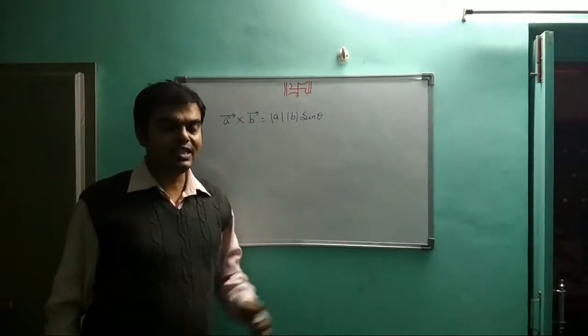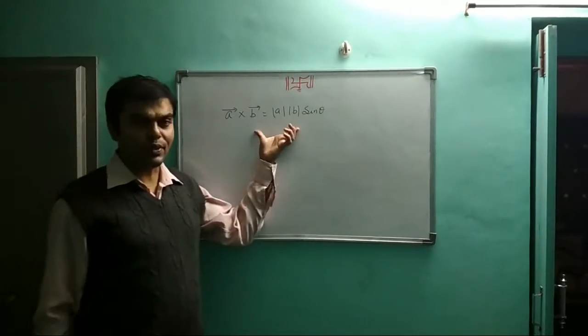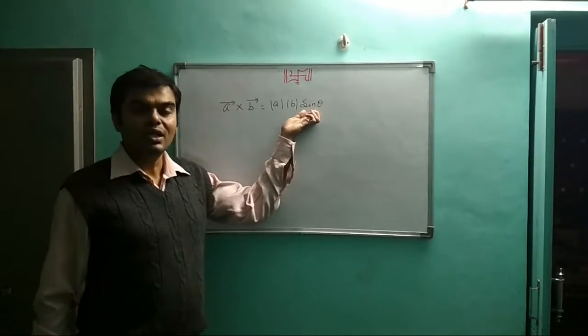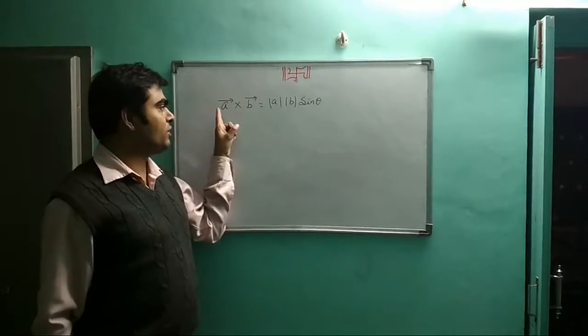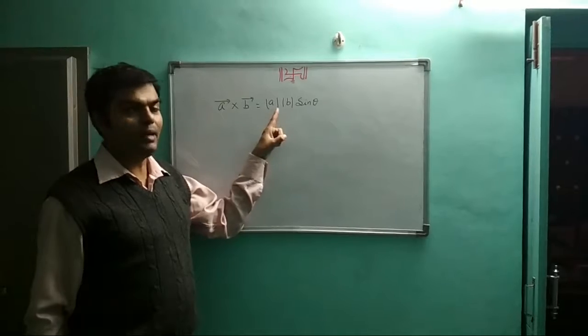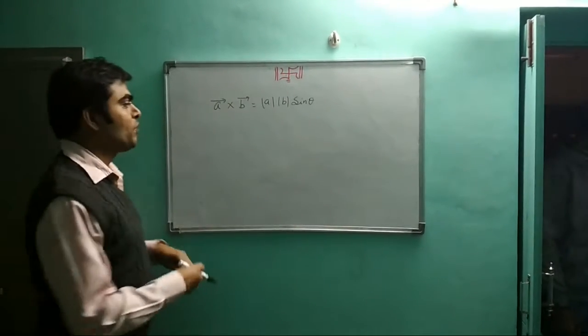Yesterday's topic was the cross product. Here is the formula: A × B equals mod A, mod B, sine theta.